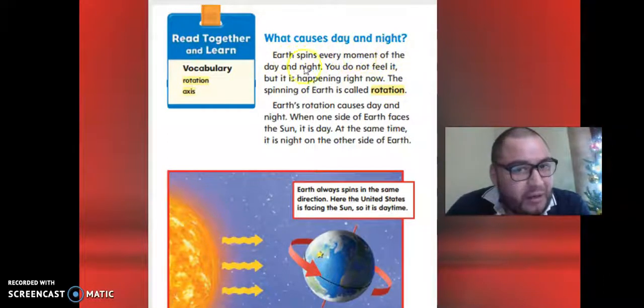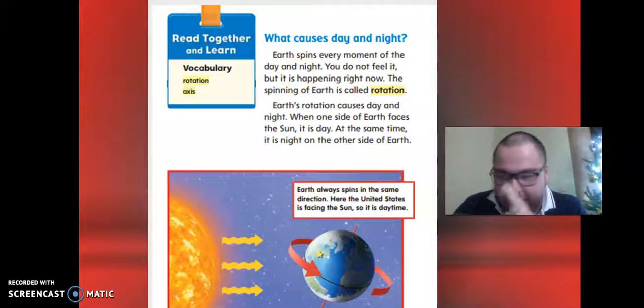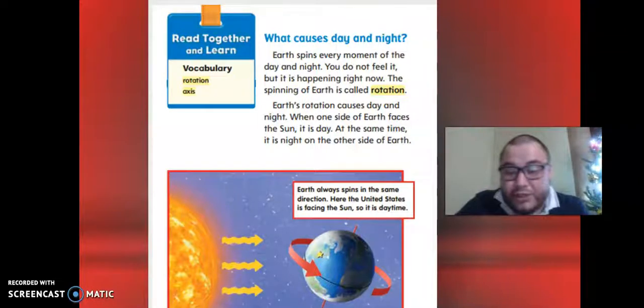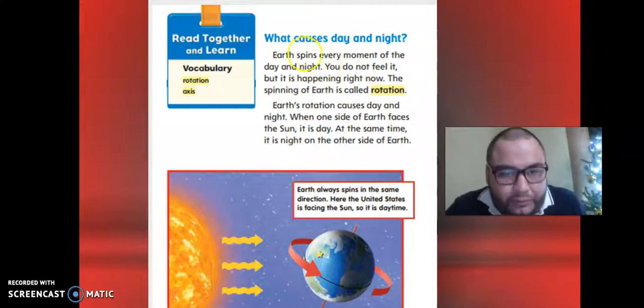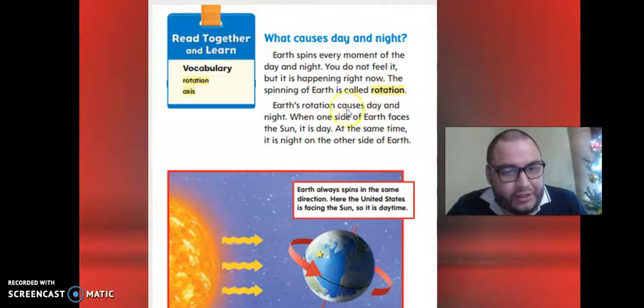Rotation, axis. What causes day and night? This is the first question. Earth spins every moment of the day and night. Every day—Monday, Tuesday, Wednesday—the planet Earth is moving, making rotation, and it's not going to stop.